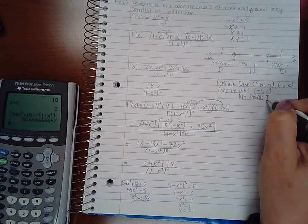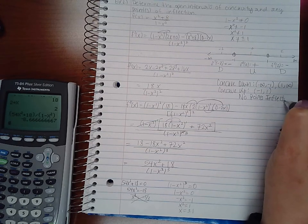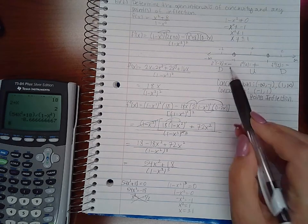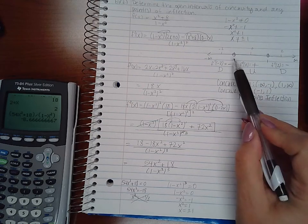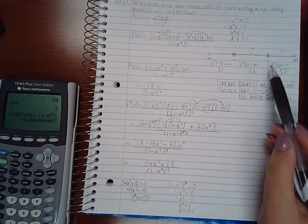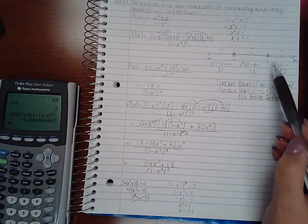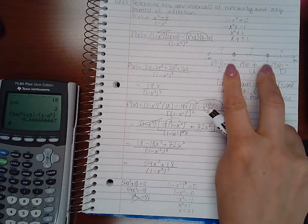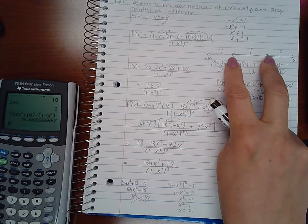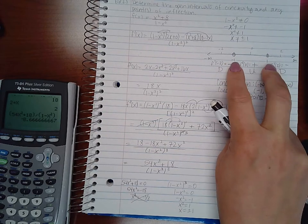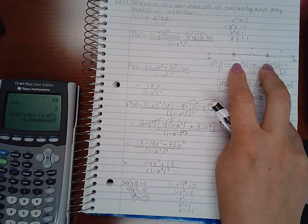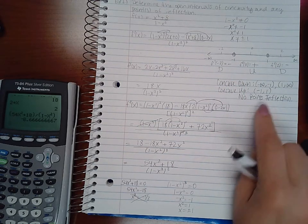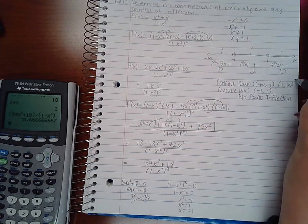However, I have no points of inflection. And that is because although the concavity changes from downward to upward around the negative 1, and it changes from upward to downward around the 1, these two x values are not in the domain of the function. Therefore, there is no point there at those particular x values. That is why I do not have any points of inflection for this particular problem.